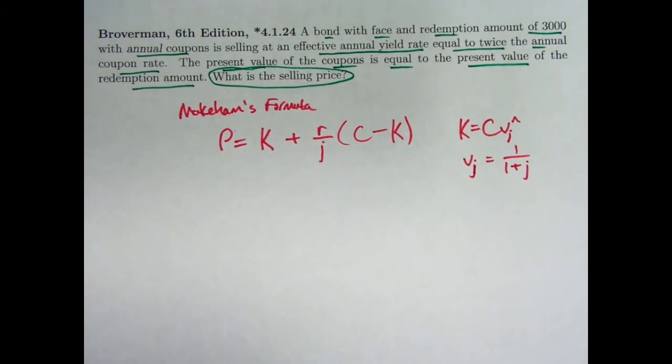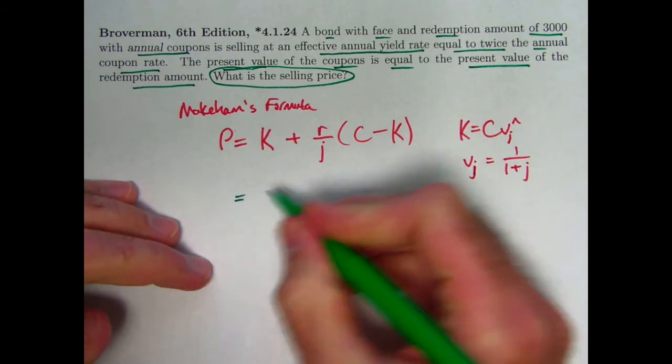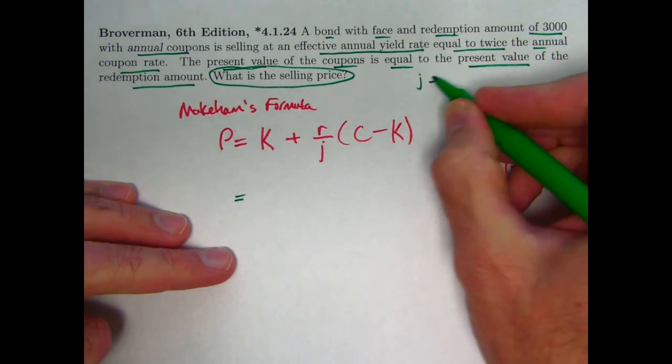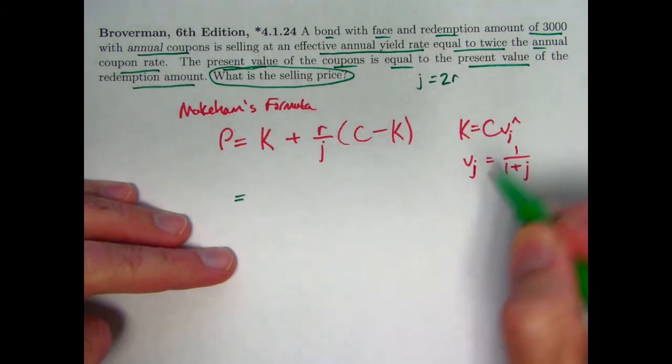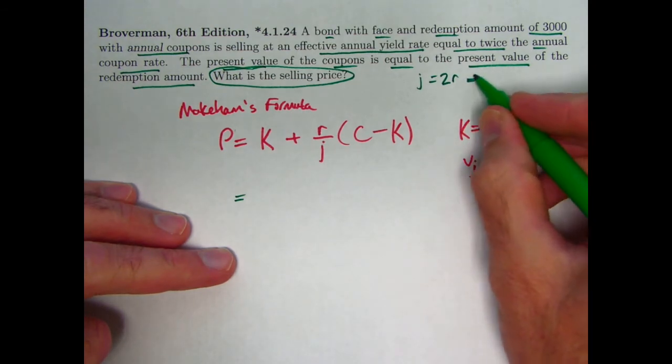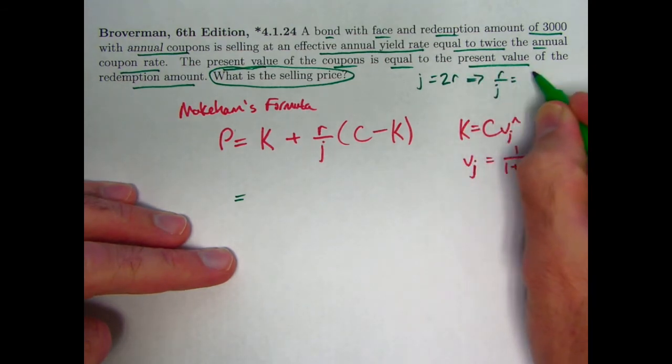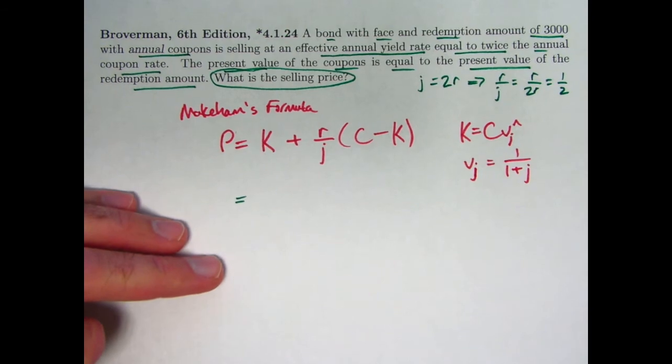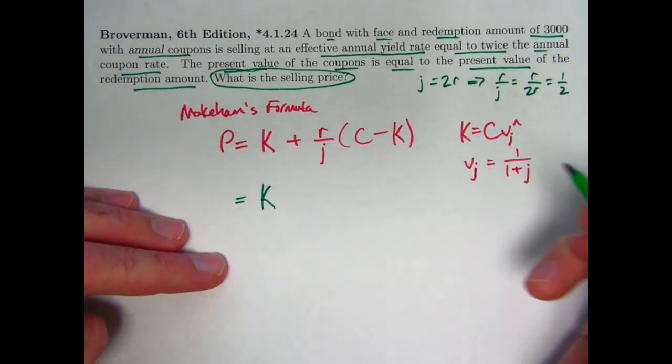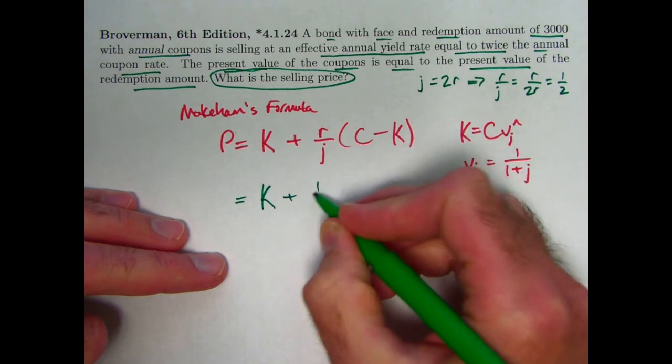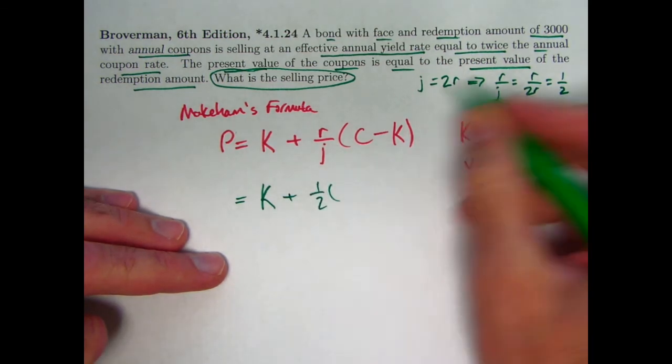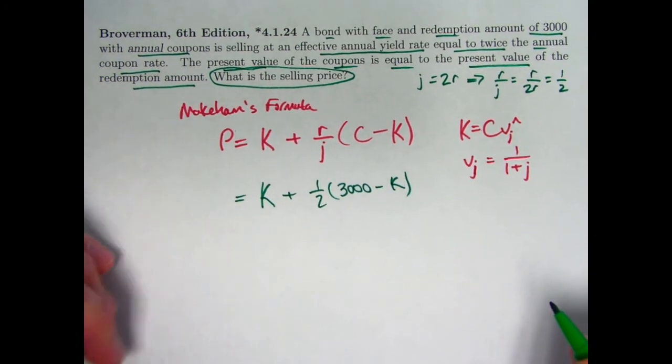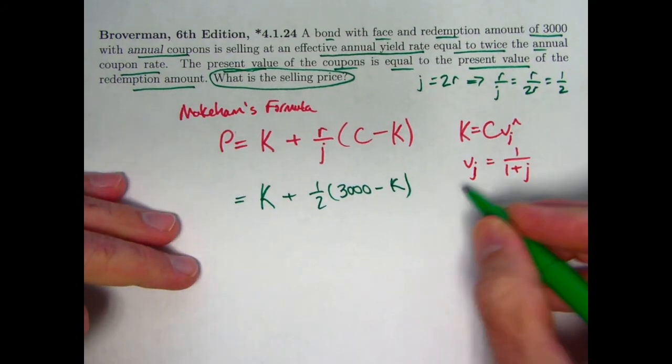All right, so let's think about this here. We know what R over J is. The effective annual yield rate J is twice the annual coupon rate, J equals 2 times R, and therefore R over J is R over 2R is a constant 1 half. So that's one thing that is a hint that maybe Makeham's formula would be useful. Let me keep the K unspecified at the moment. R over J is 1 half. C is 3,000. So we've got C to be 3,000. There is now a formula for the price in terms of K. Can we figure out K?